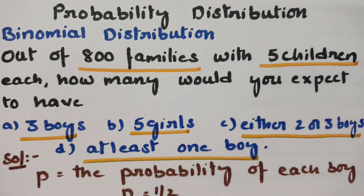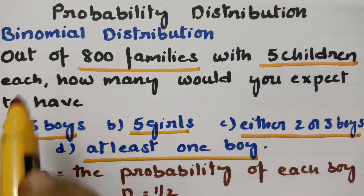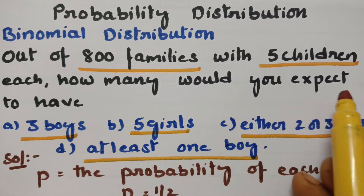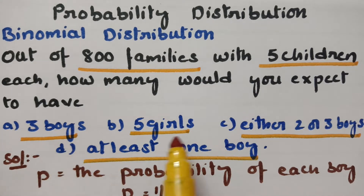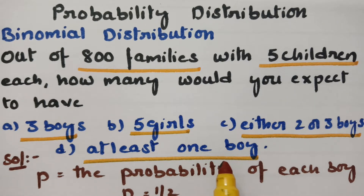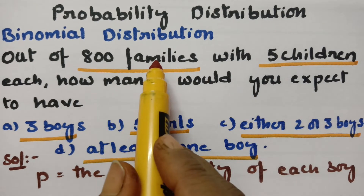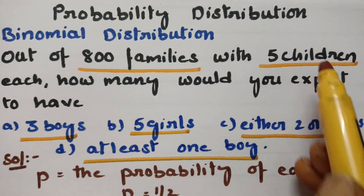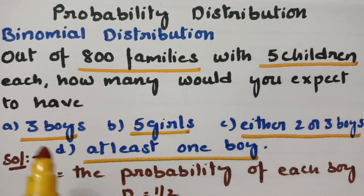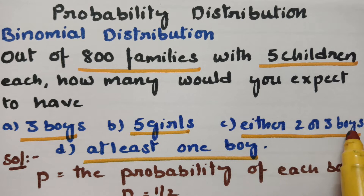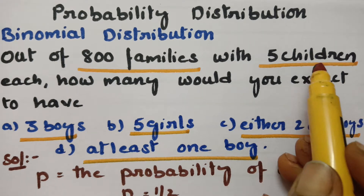Today's video is on binomial distribution, related to probability distribution. The question is: out of 800 families with 5 children each, how many would you expect to have 3 boys, 5 girls, either 2 or 3 boys, or at least 1 boy?